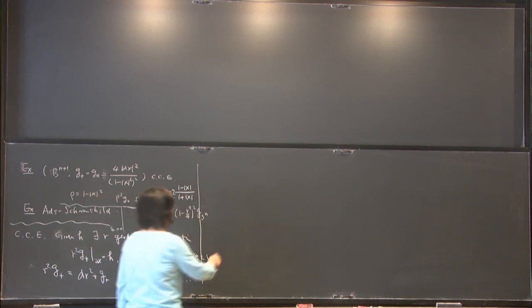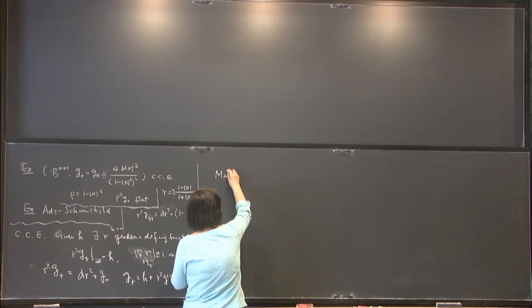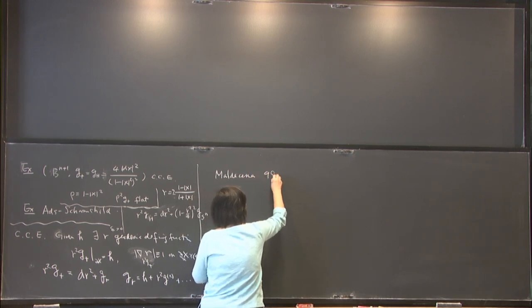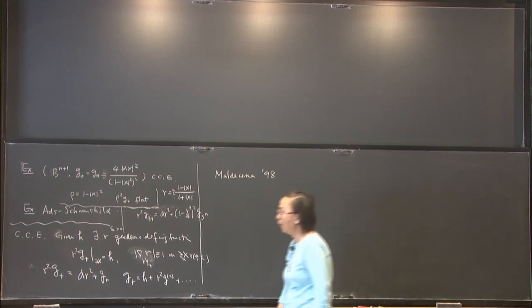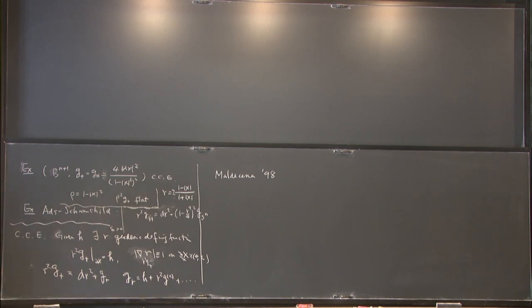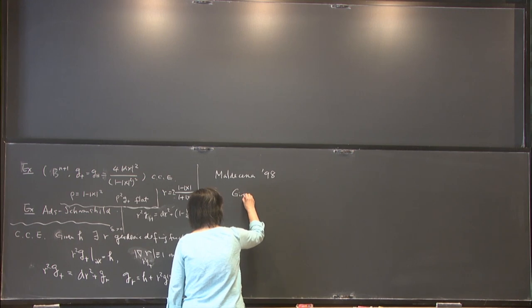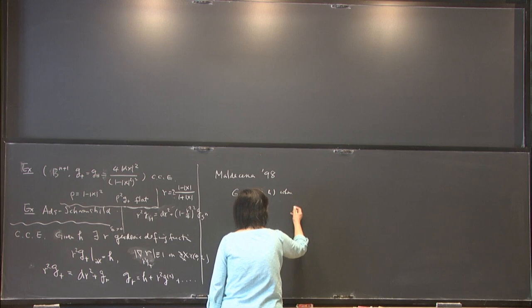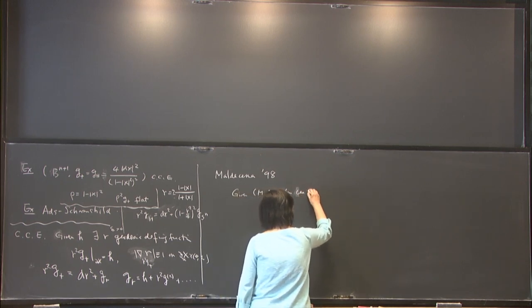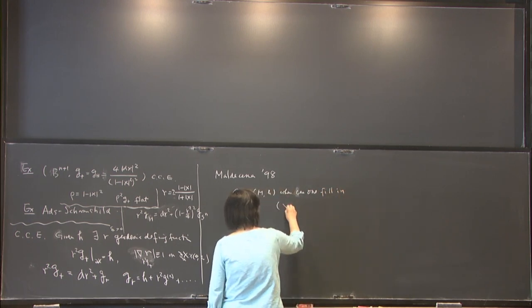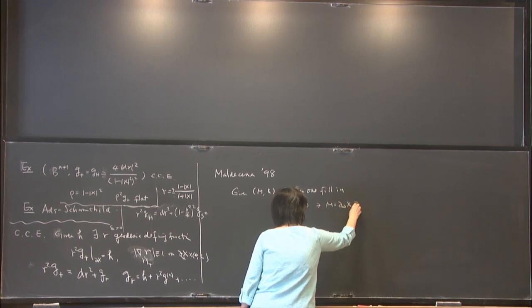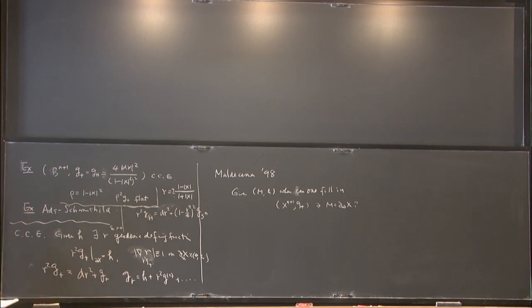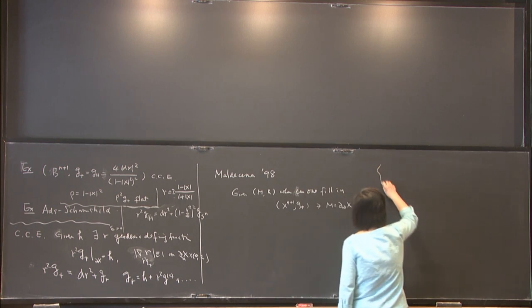The question we are interested in was proposed by Maldacena in connection with conformal field theory. He asked: for what manifold (M, h) is it allowed to be the conformal infinity of a CCE manifold? That is, given (M, h), when can one fill in an asymptotically hyperbolic CCE manifold such that M is the conformal infinity? There has been very little concrete progress on this problem.